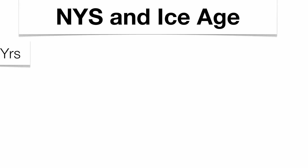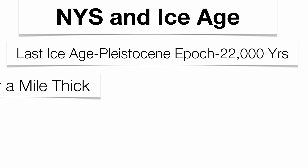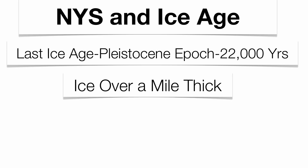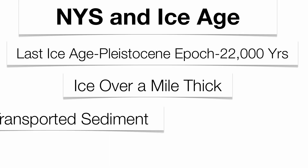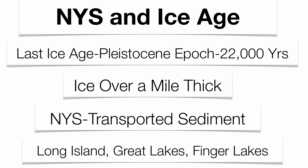That last ice age was very important to us, very simply because it happened about 22,000 years ago during the Pleistocene epoch. We believe, because of the shape of the landscape right now, that the ice might have been upwards of about a mile thick. It brought in a tremendous amount of transported sediment from northern Canada, and it did create a couple features on New York State, which includes Long Island, the Finger Lakes, and the Great Lakes.